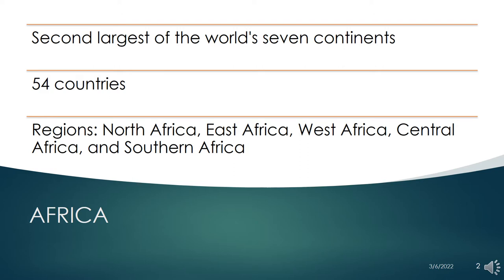There are about 54 countries in this continent. It is divided into the following regions: North Africa, East Africa, West Africa, Central Africa, and Southern Africa. The countries under each region will be named together with some national information like capital, languages, religions, and currency.